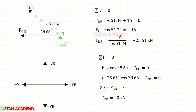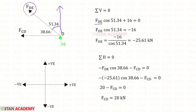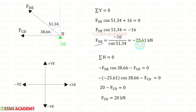I am going to take joint D and find the member forces using the method of joints. First, we have to use the rule Sigma V = 0 because there will be only one unknown. VD is acting upwards, so it will be positive. FDE is inclined; we have to resolve it in the vertical direction. To make it vertical, we need 51.34°. So with FDE, we have to multiply cos 51.34°. It is acting upwards, so it will be positive. For FDE, we will get minus 25.61 kN.